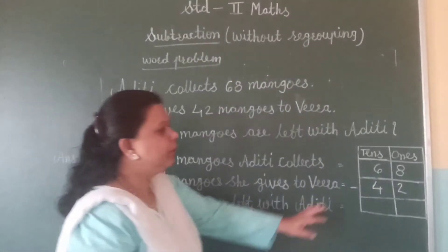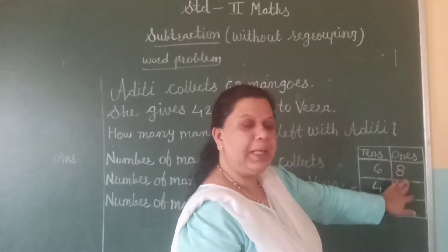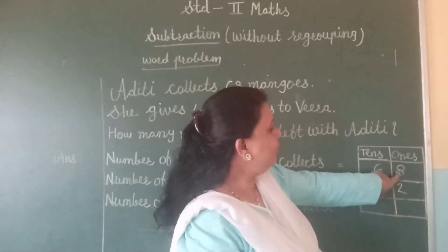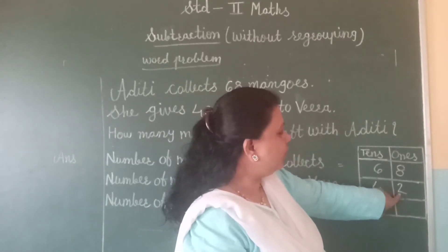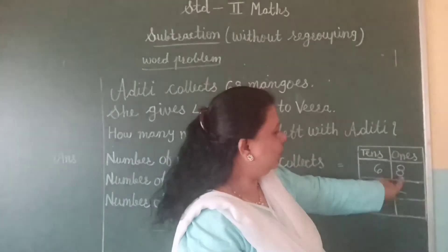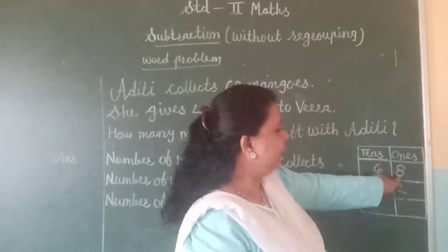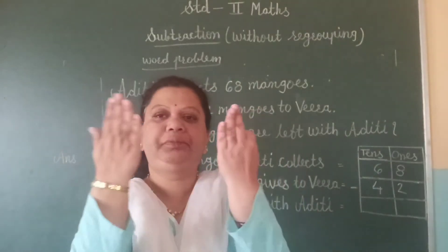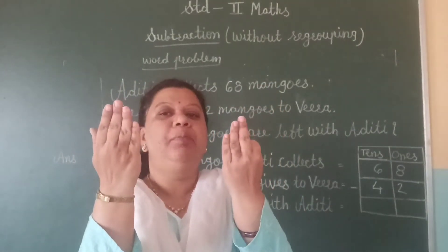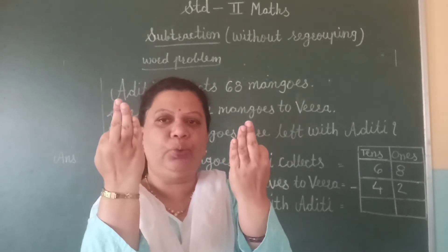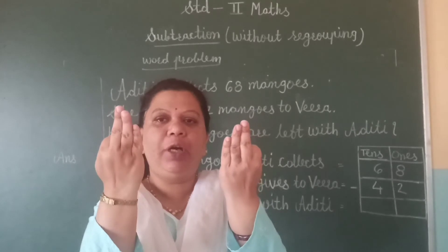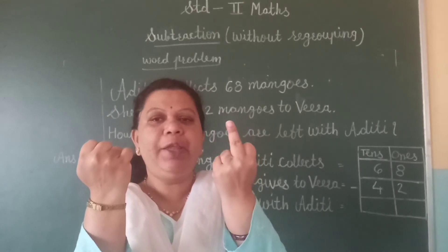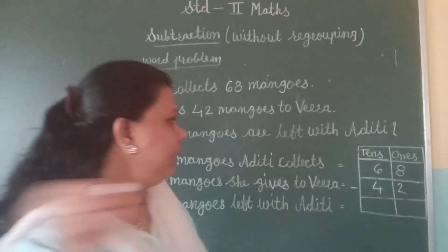First, let us do the subtraction of the ones place. We are supposed to subtract the lower number from the upper number. Here, two is the lower number and eight is the upper number. So, let us subtract two from eight. For this, take your eight fingers. Minus your two fingers — one, two. How many fingers are left over? Let us count — one, two, three, four, five, six. So, the answer is six.